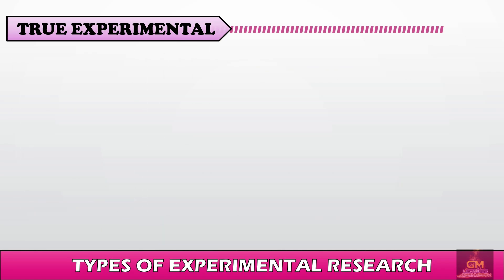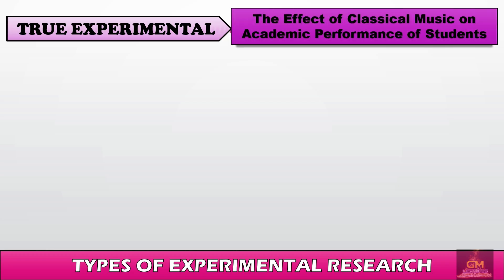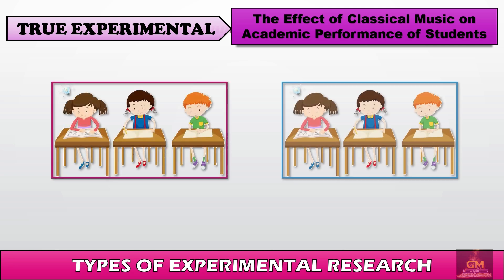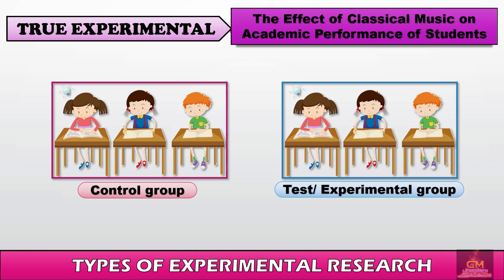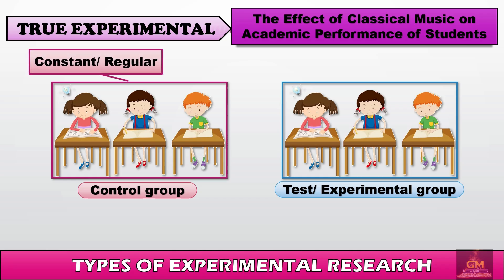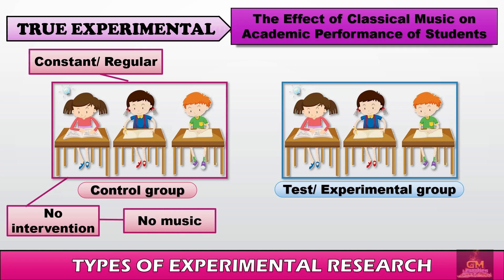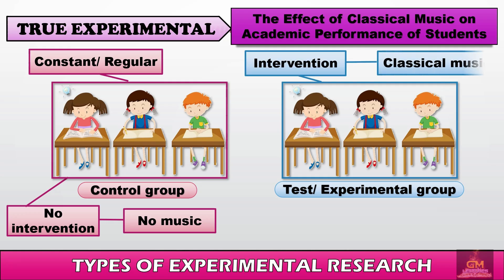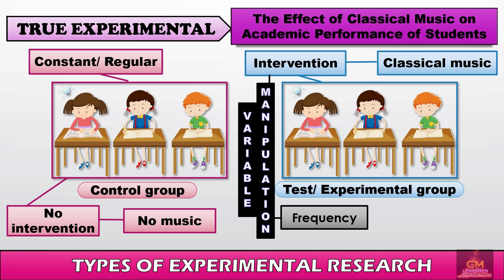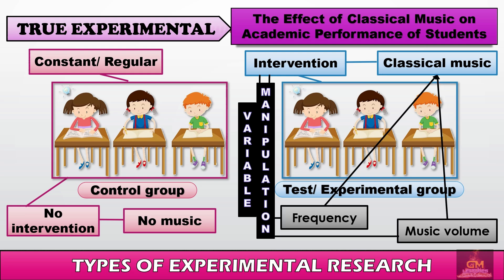Consider this example: a researcher wants to determine the effect of classical music on the academic performance of students. Since this is a true experimental research, it must have at least two groups — a control group and a test or experimental group. In the control group, everything is held constant, meaning no music is played. In the test group, there is intervention in the form of classical music, which can further be manipulated through frequency and music volume.